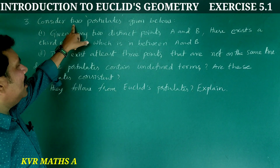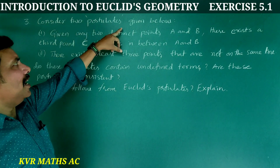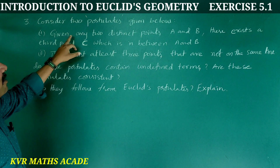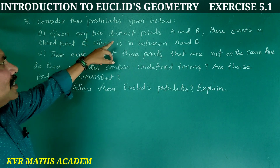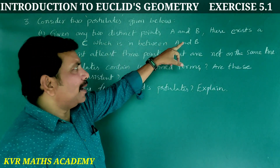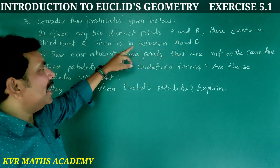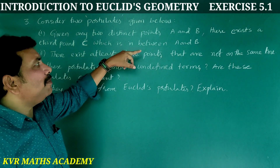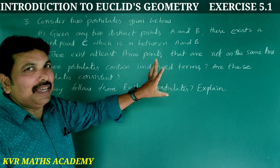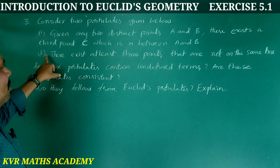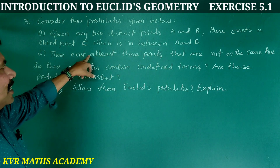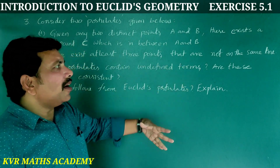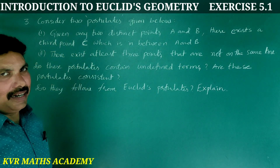Third question: Consider two postulates given below. First one: Given any two distinct points A and B, there exists a third point C which is in between A and B. Second one: There exist at least three points that are not on the same line.